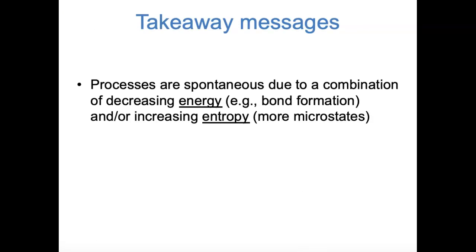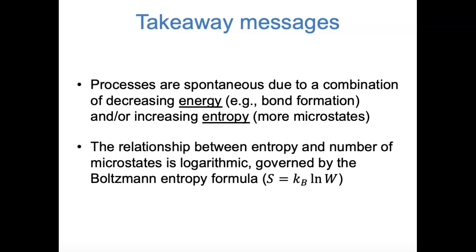To summarize: whether a chemical process is spontaneous depends on a combination of factors. First, energy tends to decrease — bonds tend to form and systems move toward their energetic ground states. Also, entropy tends to increase — systems move toward more disordered states with more ways of achieving a given observed property. The relationship between entropy and the number of microstates is logarithmic, governed by the Boltzmann entropy formula: S equals KB times LN(W). This video has been a conceptual introduction to entropy at the single particle level, and in the next few videos we'll move toward a more macroscopic view as we introduce the second and third laws of thermodynamics.